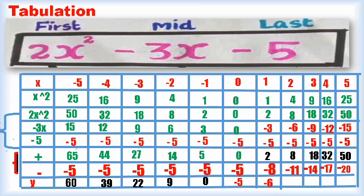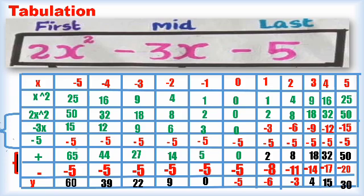For x equals 1: the plus column is 2 and the minus column is 8, so 2 minus 8 gives minus 6. For x equals 2: the plus is 8 and minus is 11, giving minus 3. For x equals 3: 18 minus 14 equals 4. For x equals 4: 32 minus 17 equals 15. For x equals 5: 50 minus 20 equals 30. I think this method will enable students to do the tabulation easily without making any mistakes.